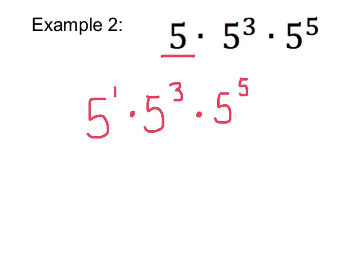When we have more than two terms, our rule is the same exact rule that we talked about before. All of these have the same base number. Our base number is 5.